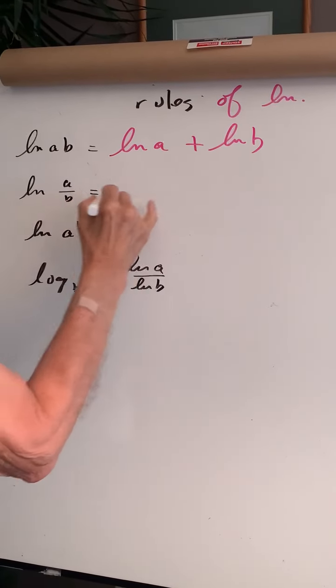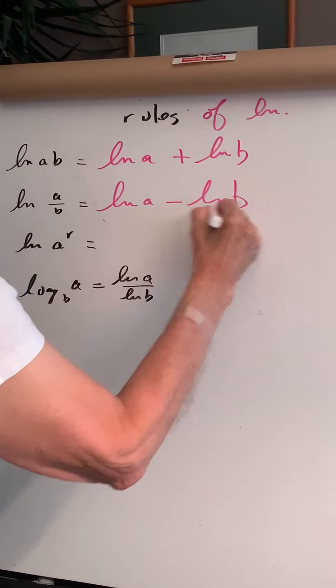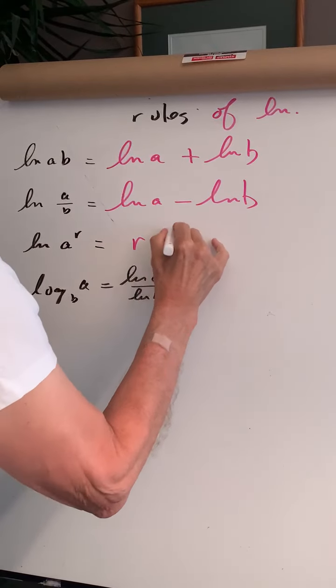The ln of A divided by B is ln A minus ln B. ln A raised to the R is R ln A.